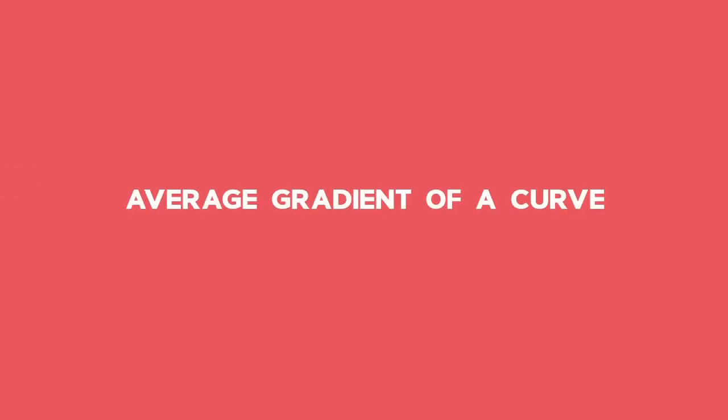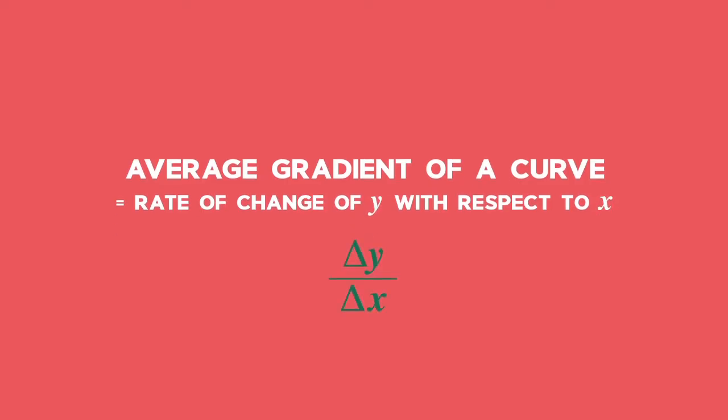To find the average gradient between two points on a curve, we are finding the rate of change of y with respect to x, and we use delta y over delta x.